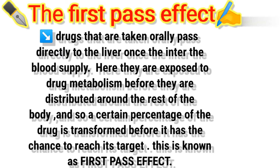Before the drug is distributed around the rest of the body, a certain percentage is transformed to metabolites — this effect is known as the first pass effect. Depending on how well the drug is metabolized, the drug remains to a large extent intact if it survives the first pass effect. If the drug is significantly broken down by liver enzymes, it will be less effective.